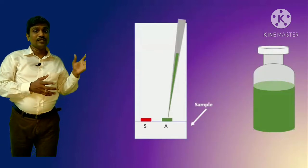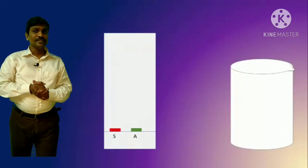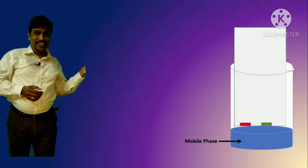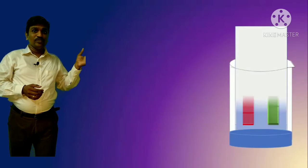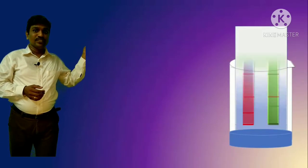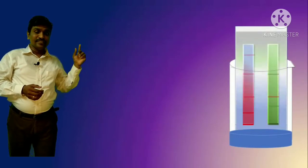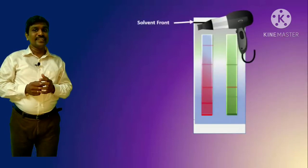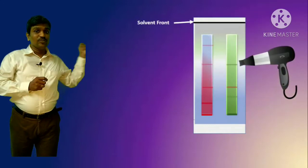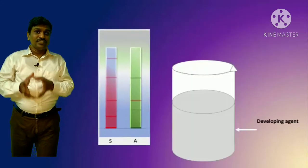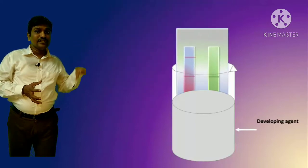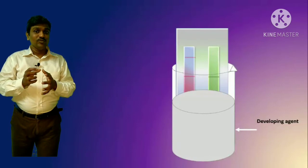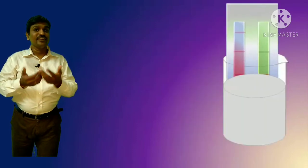Place the plate in the beaker containing the mobile phase and it will run automatically. You can see it running here. Let it run until three-quarters of the plate or up to a certain mark has been reached. That certain mark — the three-quarter distance — is known as the solvent front. Then remove the plate and dry it, marking the solvent front with a pencil.